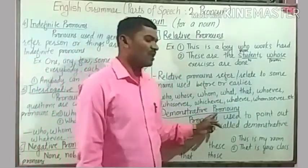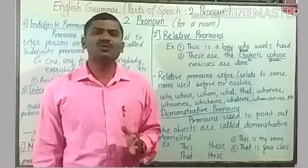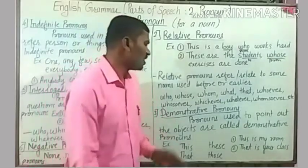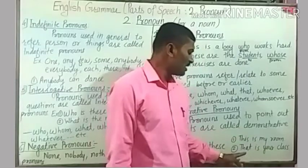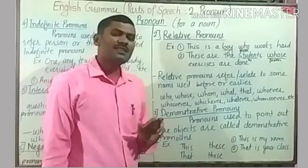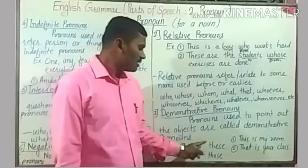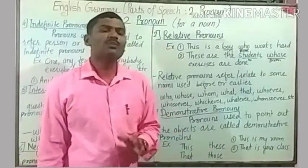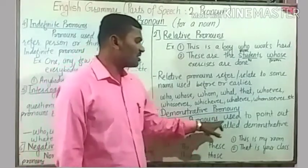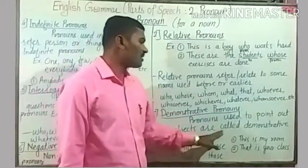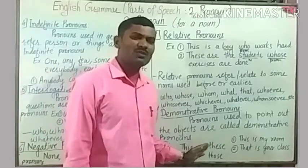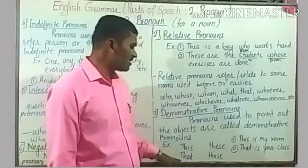Demonstrative pronouns are used to demonstrate or point out the objects or things around us. For example, 'This is my room.' 'That is your class.' This and that are singular pronouns. These and those are plural pronouns. Pronouns used to point out objects are called demonstrative pronouns: this, that, these, those.